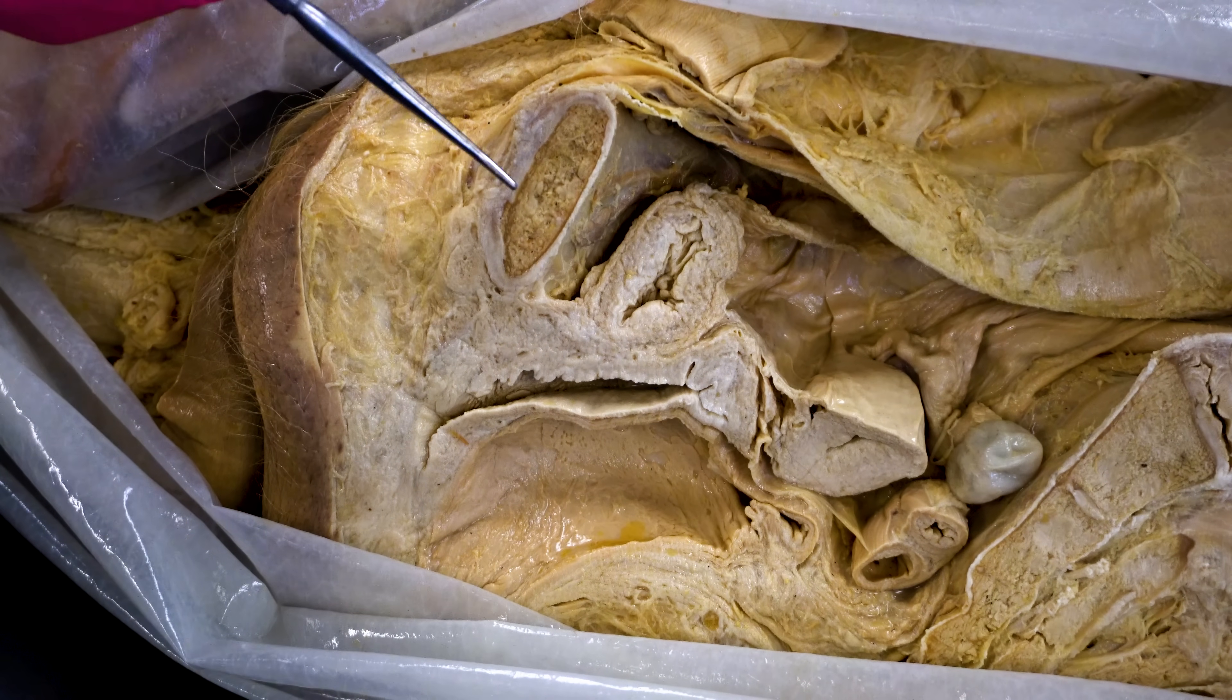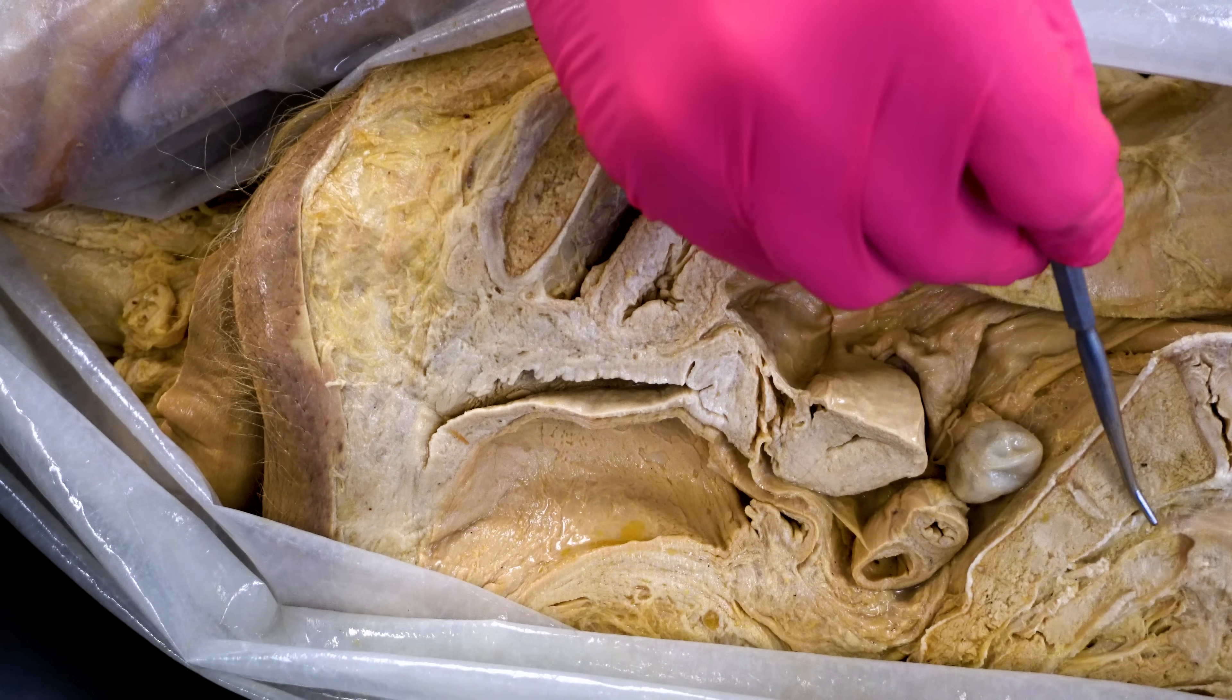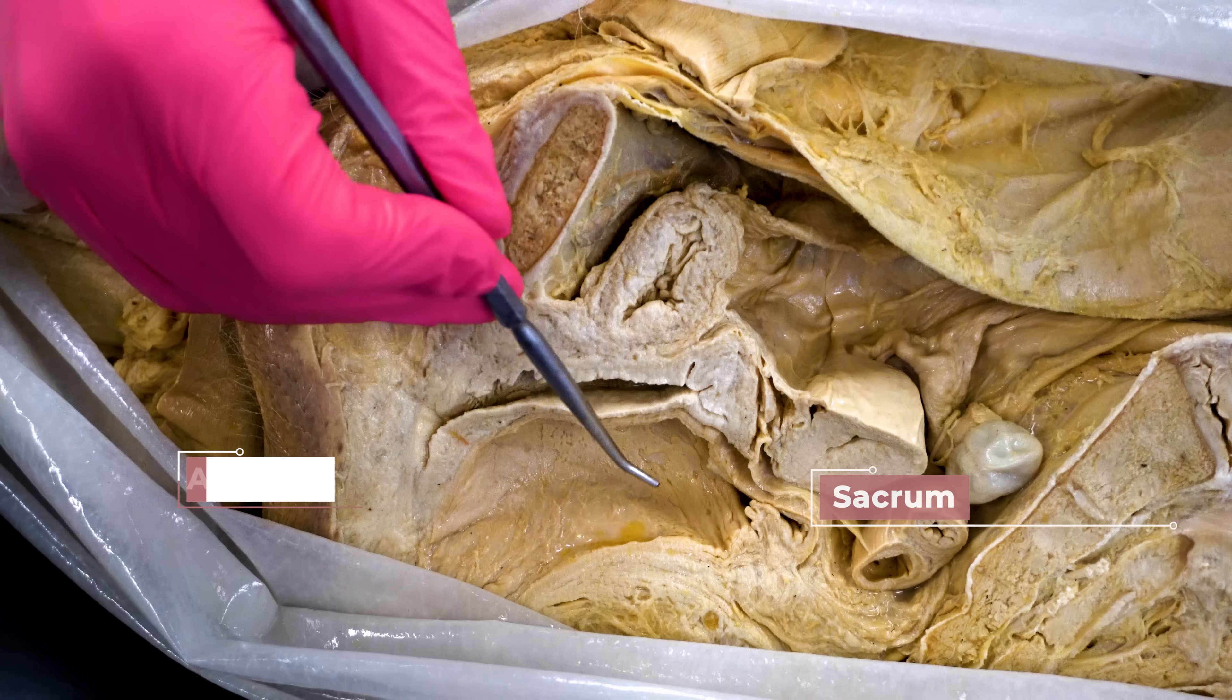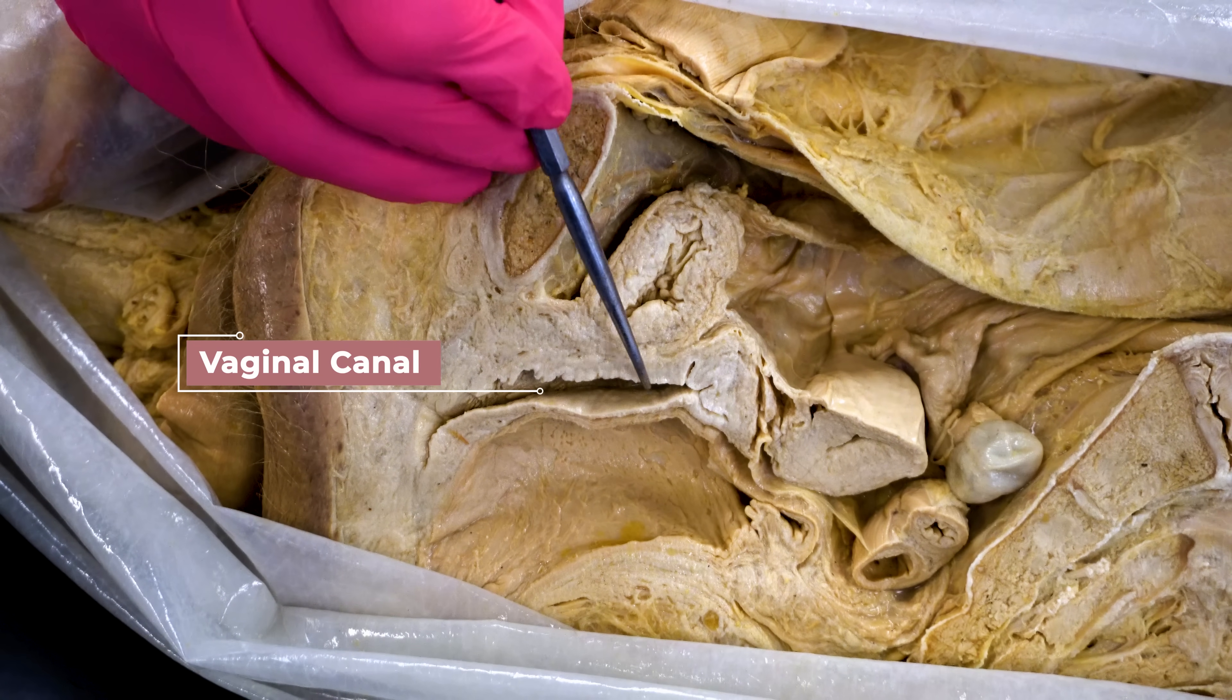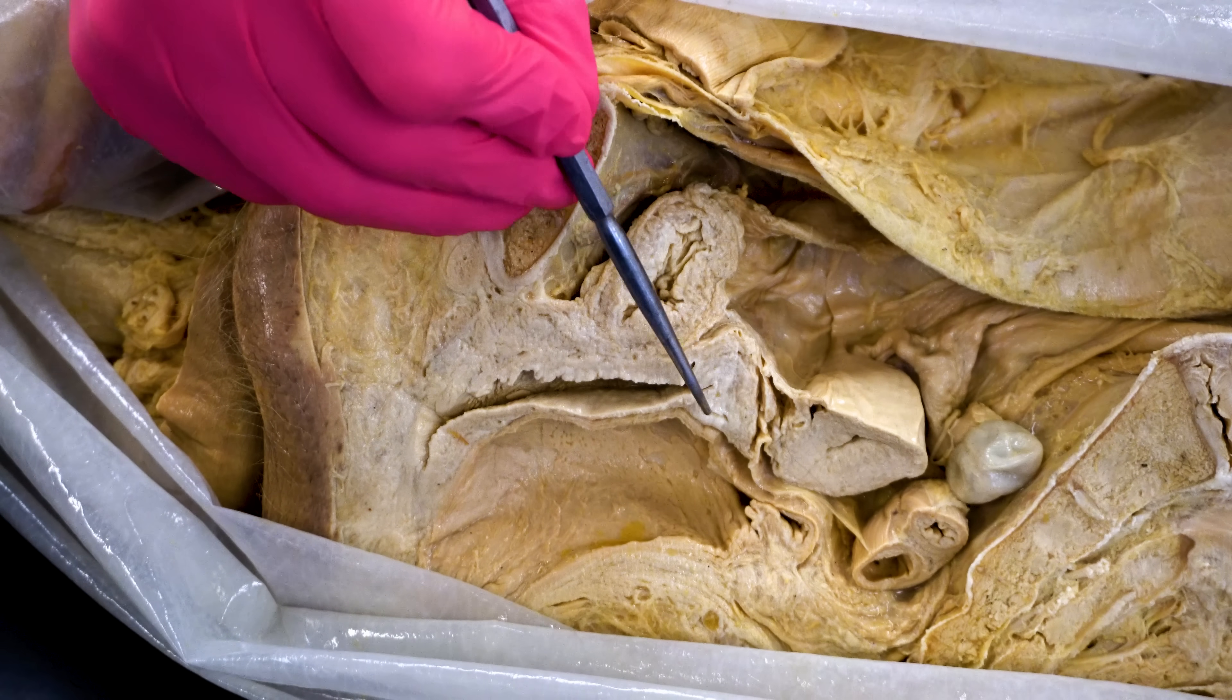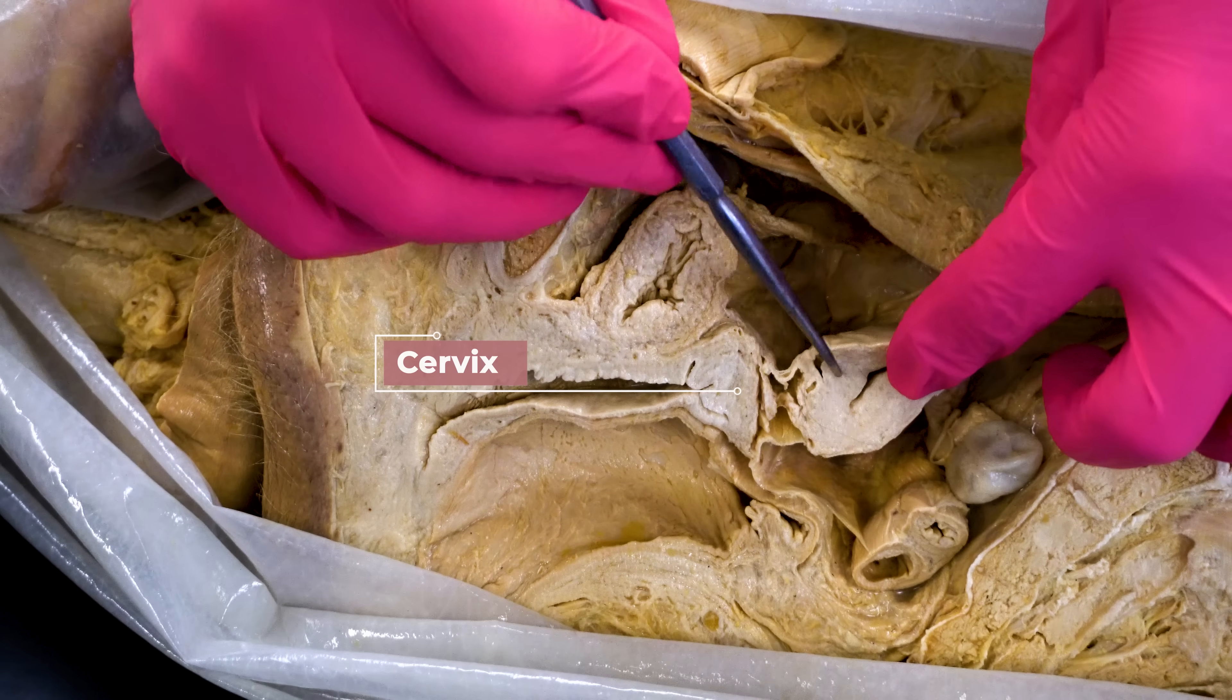Just to orient you to some structures here, here is the actual pubic bone. You can see the lower portion of the spine, specifically the sacrum, and then we also have the anus. But as far as female reproductive structures, here's the vaginal canal. You can see the proben. Here we have the beginning of the uterus, specifically the cervix. And then we also have the body of the uterus here.